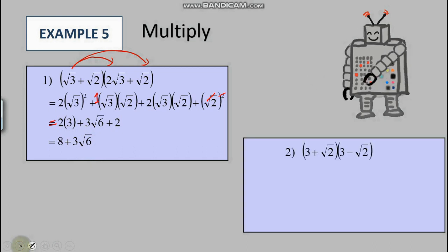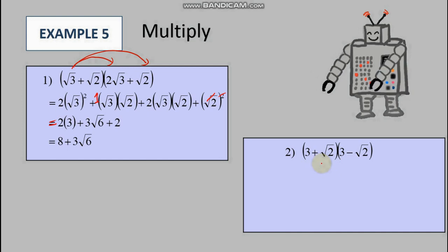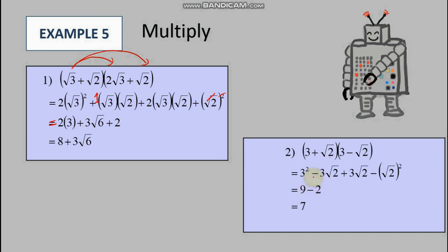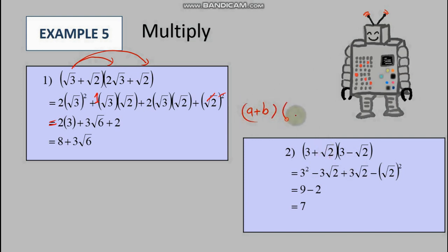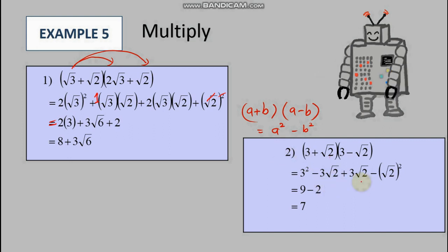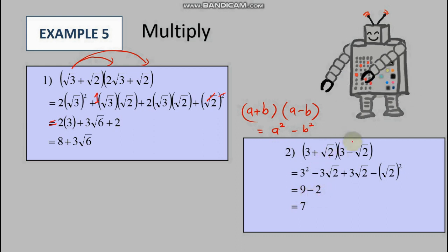For the other question, thankfully both brackets contain the same surds: √3 and √2. We can use the difference of squares pattern directly: (√3 + √2)(√3 − √2) = (√3)² − (√2)² = 3 − 2 = 1. Remember, it's always a² − b² when you multiply (a+b)(a−b), so the answer is simply 7.